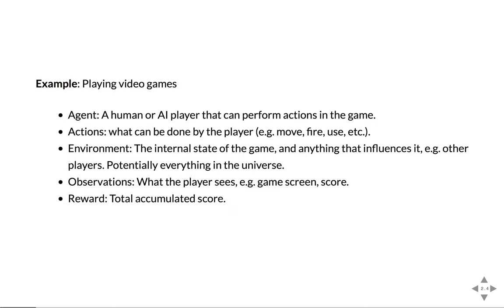In the video game setting, our agent will be either a human or AI player, and he can perform a set of actions on the game. The actions depend on the game. The environment in total is the internal state of the game, perhaps other players that he can't control, perhaps things that can come over the network. The agent only observes specific observations that the environment gives him, and he gets a reward — which in the case of a game might be the score or a measure of how well you're playing.